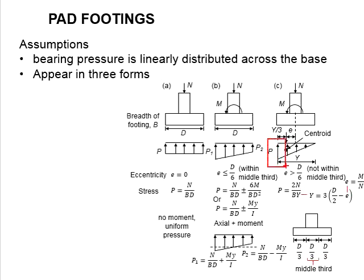The stress here now is determined by this formula, which is equal to 2 times axial load divided by BY. The B here represents the breadth of footing, while the Y here represents the height of the triangle. The Y here is obtained from this formula.